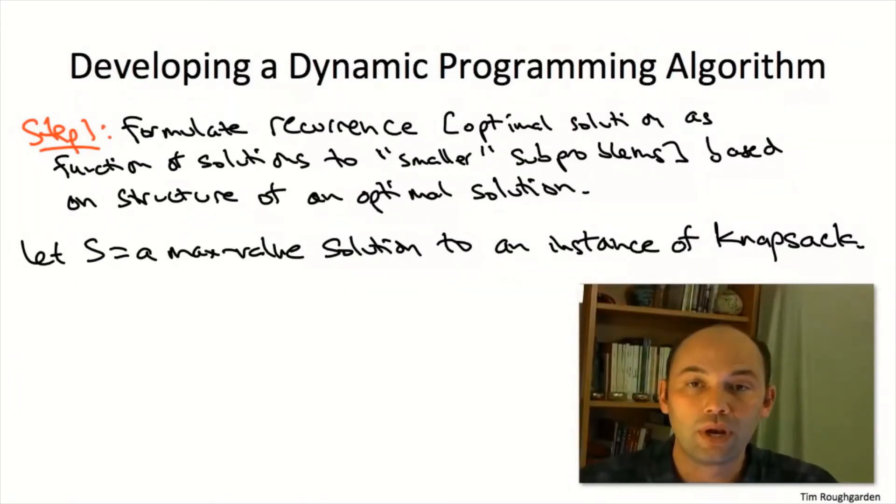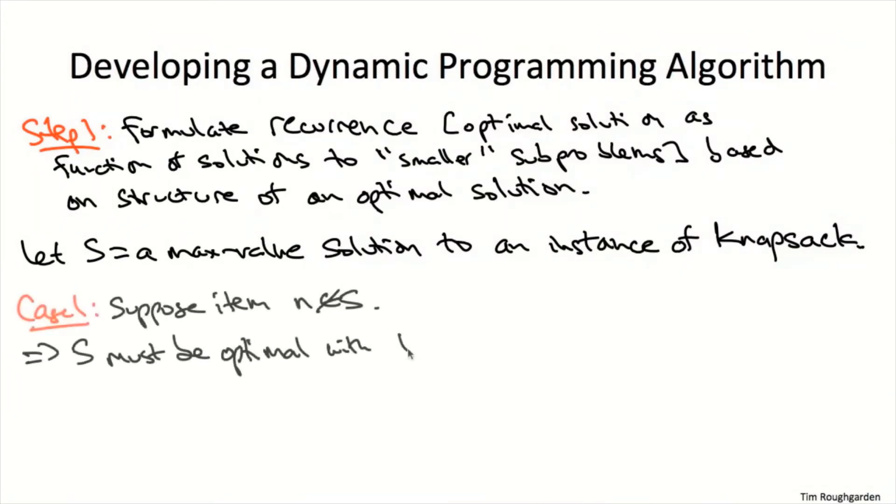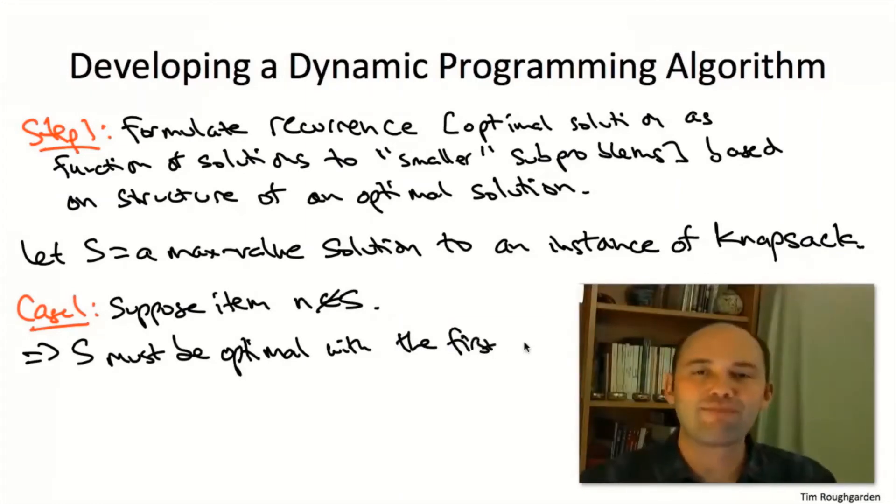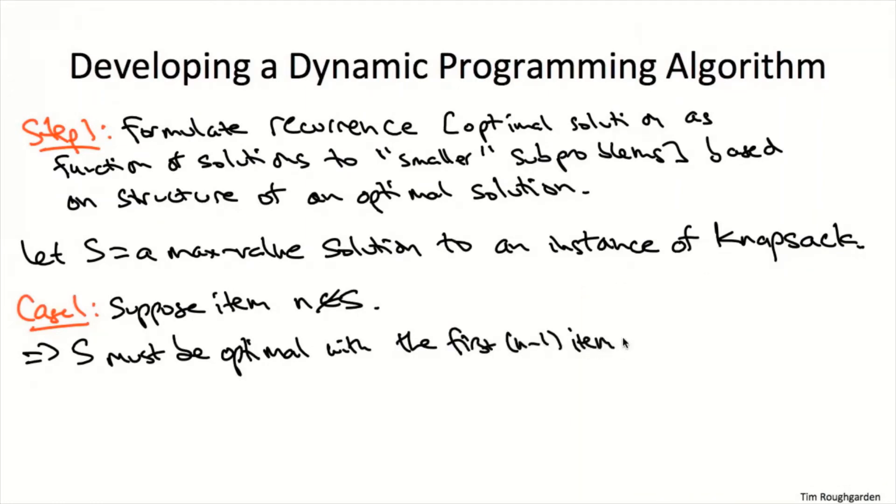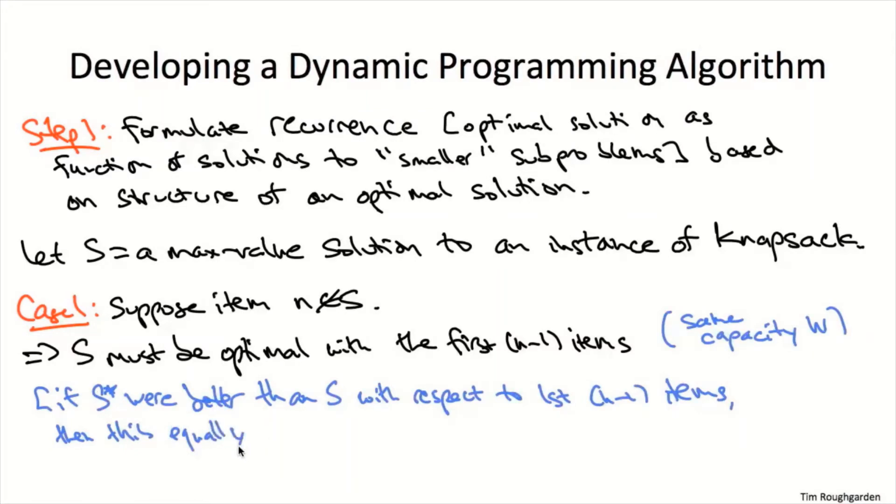We'll start with the easy case when it doesn't. What we argued in the path graph problem was that the max weight independence set has to be optimal if we just delete that rightmost edge. Here the analogous claim is that this set S should still be optimal if we delete the final item N from the knapsack instance. The argument is the exact same near-trivial contradiction. If there is a different solution S* amongst the first N-1 items with weight even bigger than that of S, we could regard this equally well as a superior knapsack feasible solution back with all N items, but that contradicts the purported optimality of S.